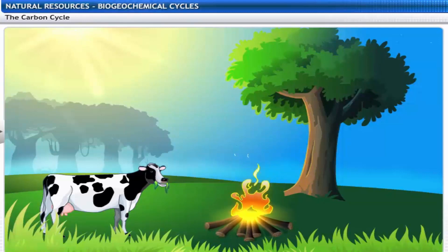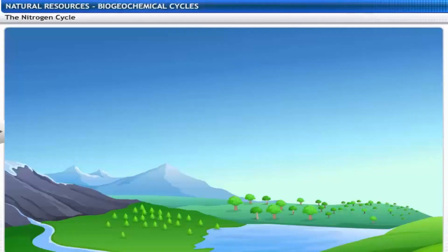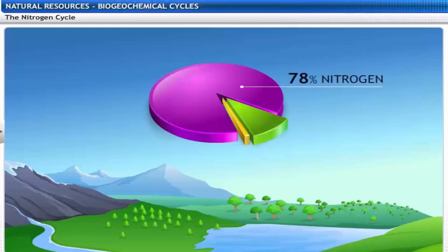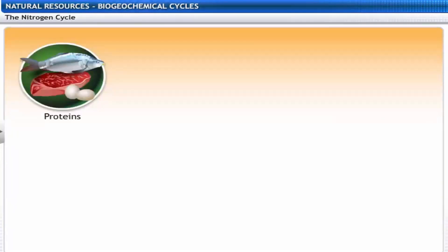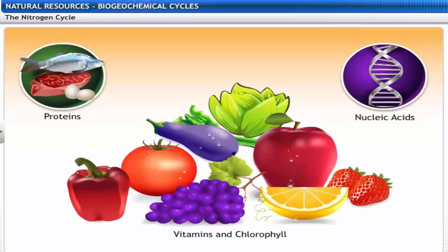That is how the biological and the geological worlds come together to maintain the carbon balance in the biosphere. Let's now look at an element that makes up 78% of the atmospheric air. Nitrogen. Nitrogen is an essential constituent of proteins, nucleic acids like DNA and RNA, vitamins and chlorophyll. This makes nitrogen an essential nutrient for all life forms.